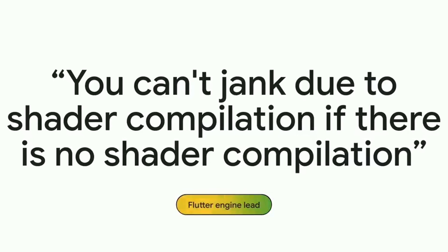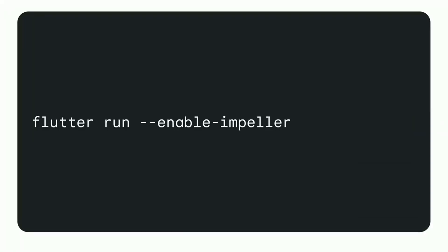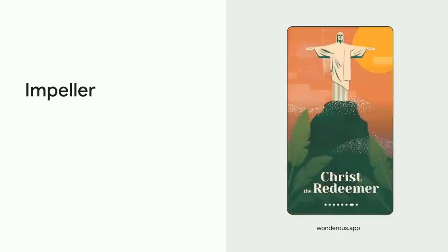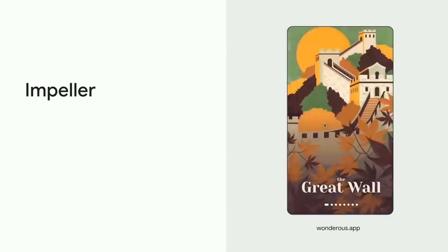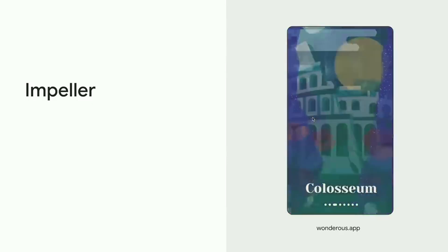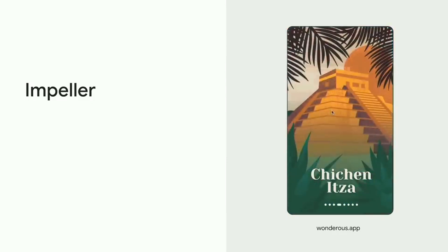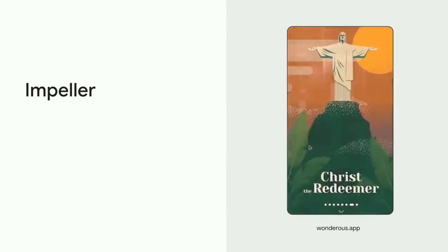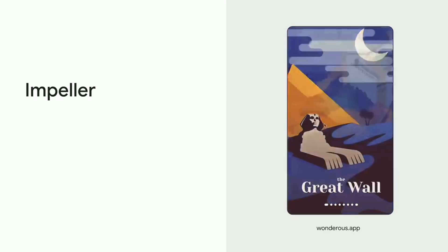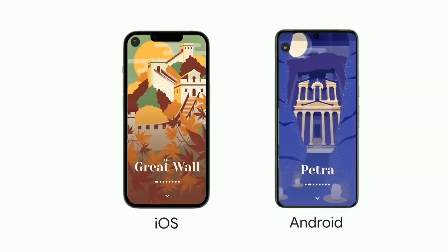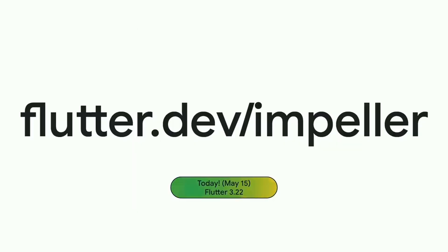The compiler compiles all necessary shaders in advance to maximize performance and minimize lag that occurs with dynamic shader compilation. This new engine enables up to twice as fast SVG and Lottie animations, as well as significantly improved blur effect performance on iOS. Impeller is natively available on iOS and can now also be tested on Android. For more information about Impeller and instructions on how to enable it, visit flutter.dev/impeller.